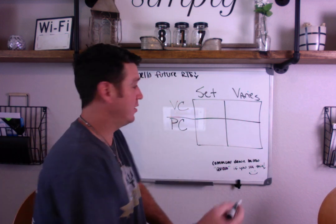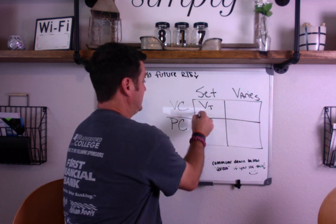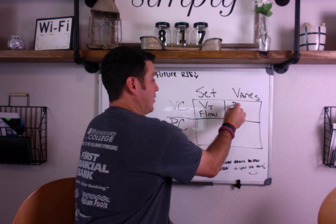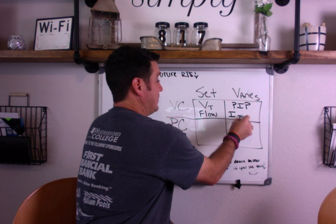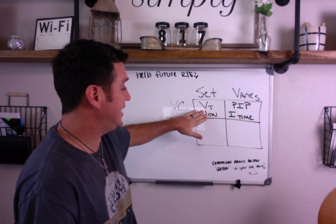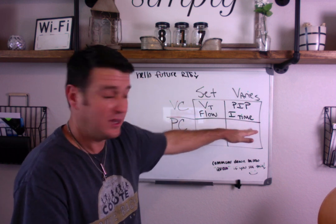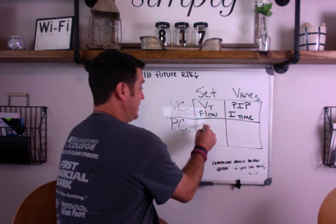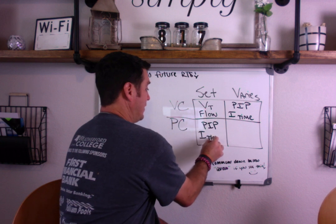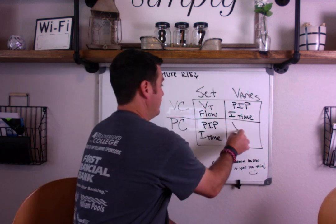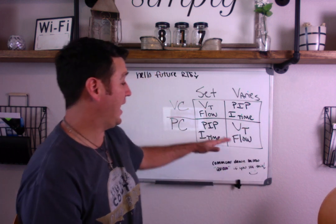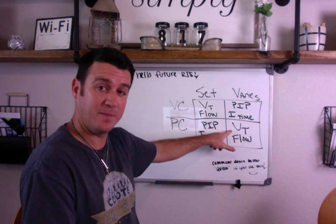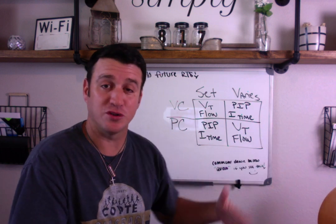In volume control, you already know that we set a tidal volume and we set a flow. What varies is our PIP and our I-time varies based off of these settings. If you change flow, you'll change your I-time. If you change tidal volume, you'll change your I-time. Now in pressure control, we set our PIP and we set our I-time. And guess what varies? Our tidal volume and our flow. As compliance changes in pressure control, our PIP will remain constant, our I-time will remain constant, and our tidal volume will vary. Our flows will also vary according to what's needed to sustain that pressure for the set I-time.